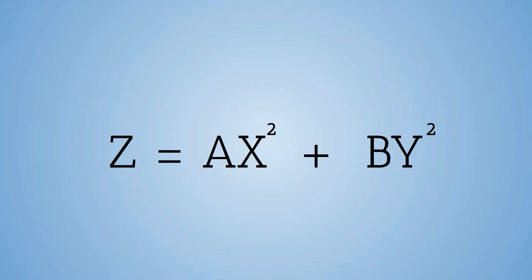Z is equal to ax squared plus by squared, where a and b have different signs.